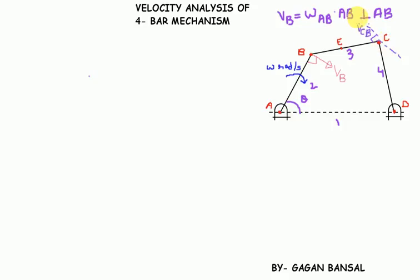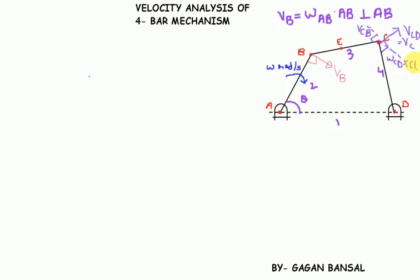We don't know whether it will be in the positive or negative direction, so we will draw a vector of known direction which is perpendicular to link BC. Also, the absolute velocity of point C, that is velocity of C with respect to D on link 4, will be perpendicular to link CD, and its magnitude will be omega_CD multiplied by distance CD.